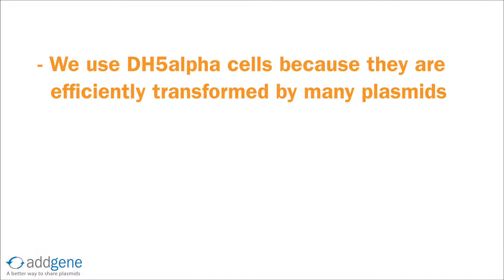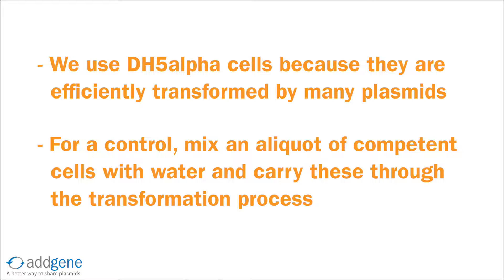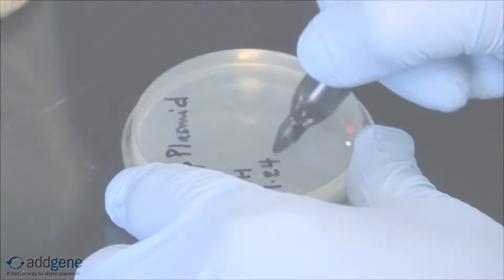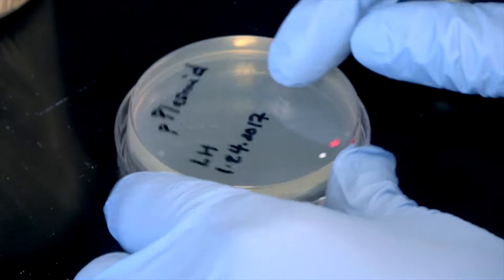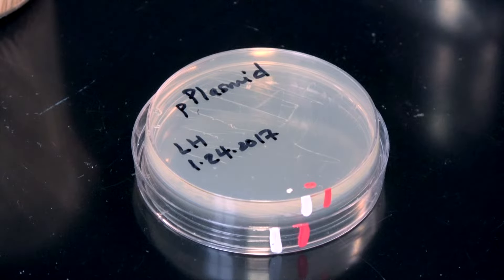We use DH5 alpha cells for most of our transformations because they are efficiently transformed by many plasmids. As a control, you should also mix a separate aliquot of competent cells with water and carry these through the rest of the transformation process. These cells should not grow once plated, but will give you confidence that your antibiotic works properly. Be sure to carefully label your samples and controls so you don't confuse them along the way.